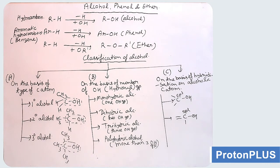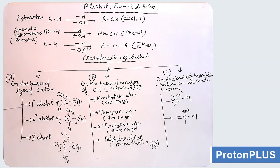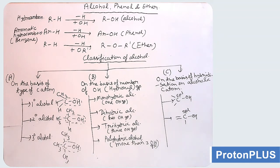We will start with the first classification of alcohol. As we have done classification of alkyl halide and aromatic halide, in a similar way we will classify alcohol. First classification is on the basis of type of carbon atom. If the alcoholic carbon atom — the carbon atom on which the OH group is present — is bonded directly to only one carbon, that is a primary or one-degree alcohol. When the alcoholic carbon is directly bonded to two carbon atoms, that is a two-degree alcohol. When it is directly bonded to three carbon atoms, that is a three-degree alcohol.